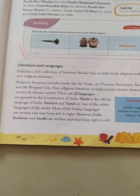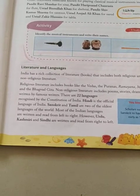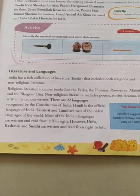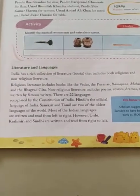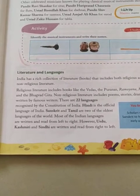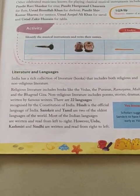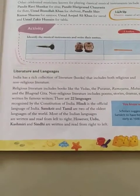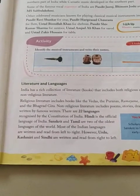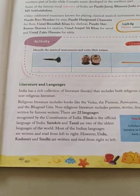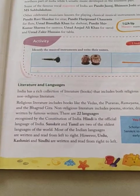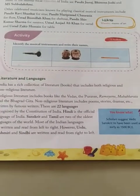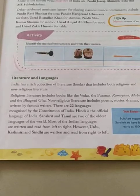Literature means books. India has a rich collection of literature that includes both religious and non-religious literature. Religious means related to our religion, and non-religious means apart from this — for example, stories, drama, etc. The religious literature includes books like the Vedas, the Puranas, Ramayana, Mahabharata and the Bhagavad Gita.